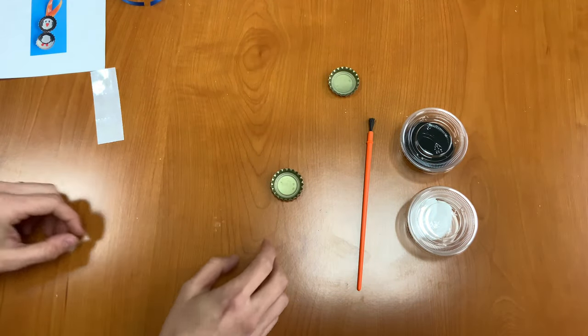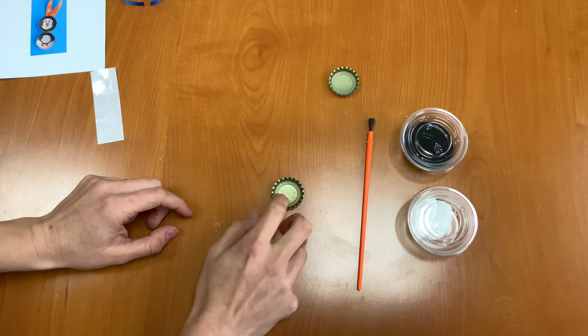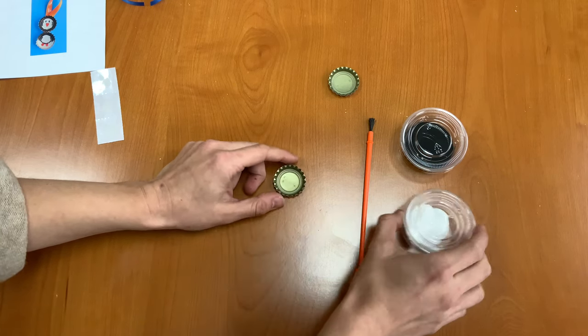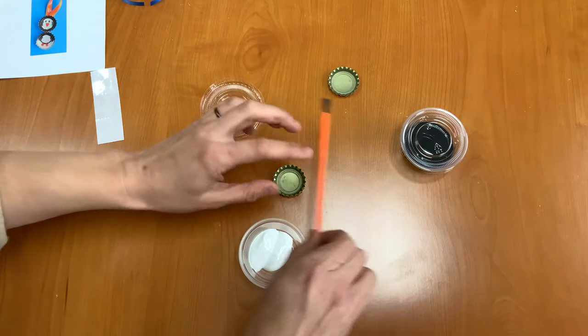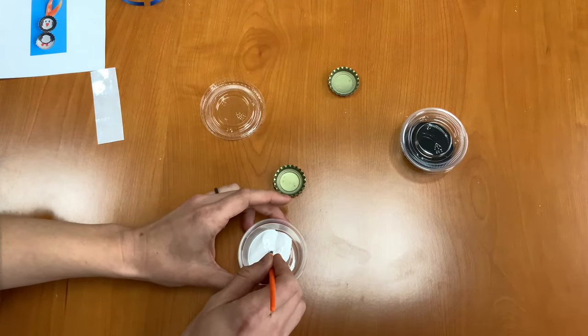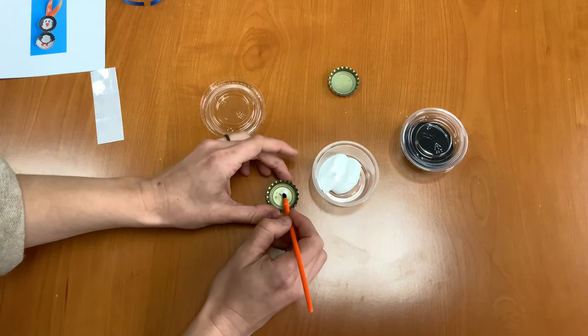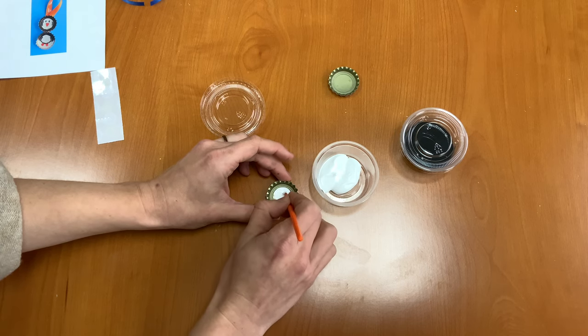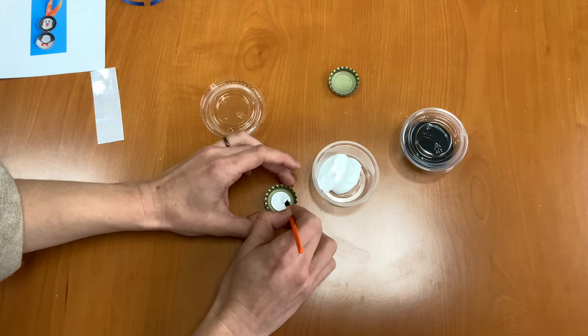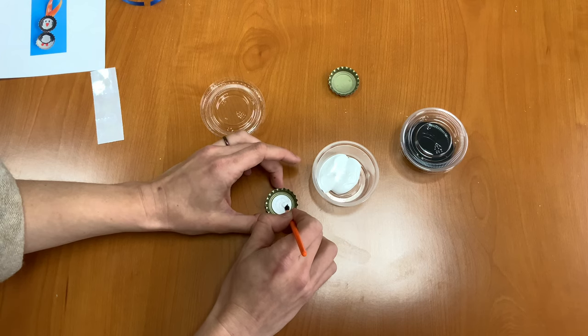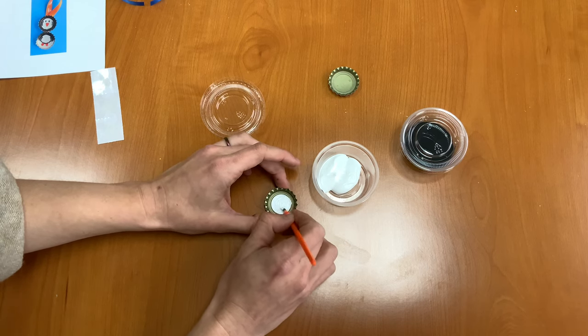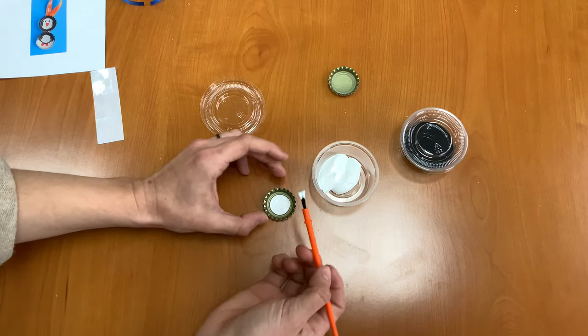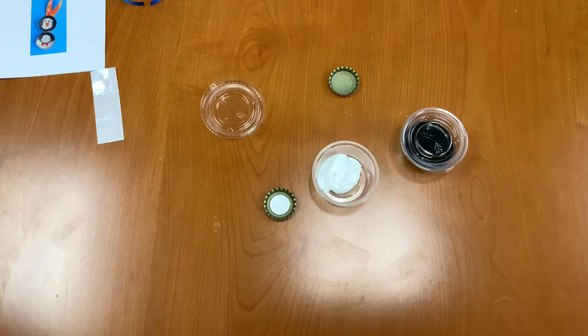Our first step is to start by painting the inside of one of our bottle caps completely with white paint, and then once that dries we're going to outline the outside with black. I'm going to open my white paint, dip my paintbrush in, and I'm just going to cover this inner circle with white paint. I'm going to wait for that to dry.